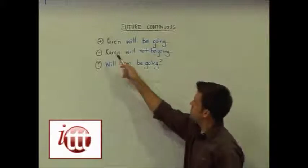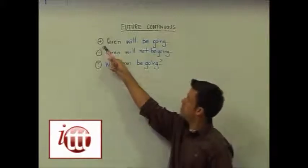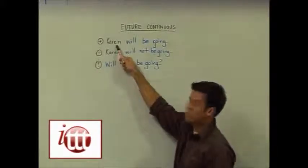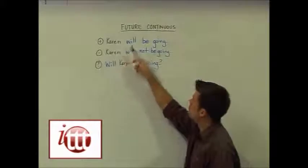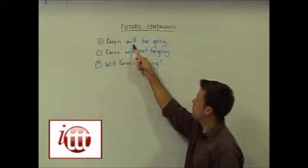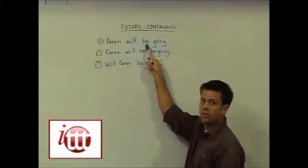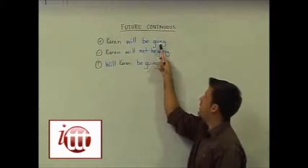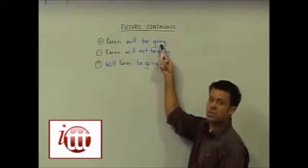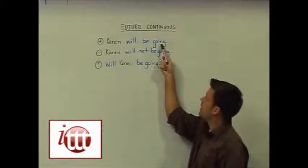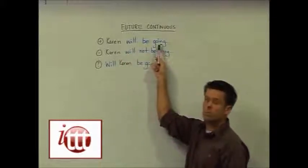To form this tense in the positive form, we have our subject here — we've used Karen — the word 'will,' our auxiliary verb, our helping verb, 'to be,' and then the present participle or the verb plus -ing. So, Karen will be going.